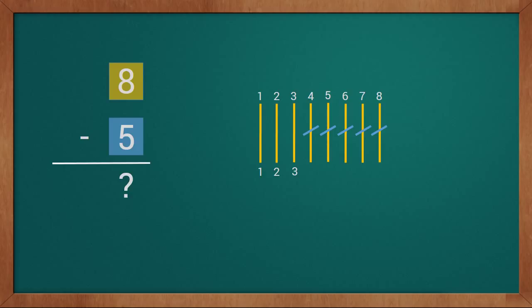Now we will count how many sticks we have: one, two, three. We have a total of three sticks. So this way we got eight minus five equals three. Our answer is three.